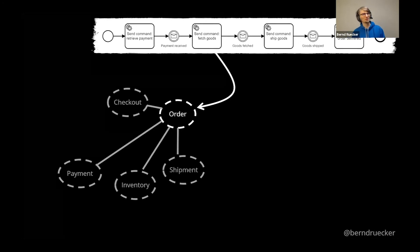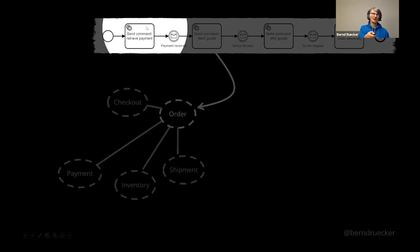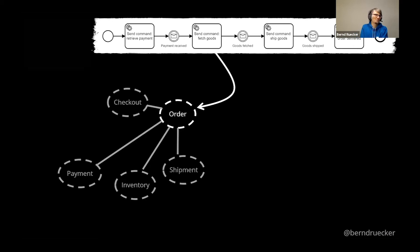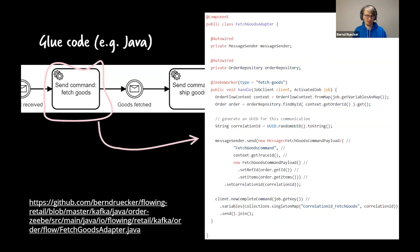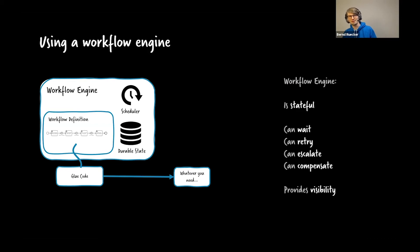With a workflow engine I can do stateful orchestrations using process automation. I define process models where, for example, I send a command to retrieve payment and then wait — waiting for a message or event indicating payment was received. Because I have a workflow engine, this is stateful: it can wait for days, and it can escalate if things wait too long. The engine keeps state safe — in a relational database or event log — so that's not your problem.